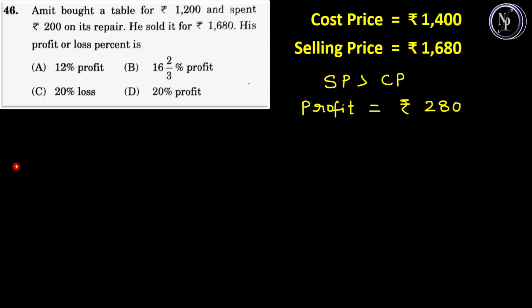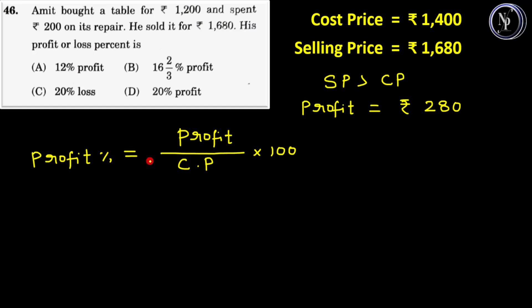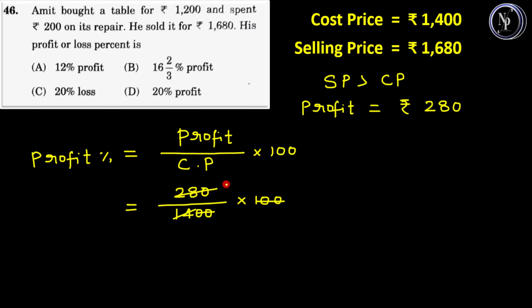To find the profit percent, we have the formula: profit percent is equal to profit divided by cost price CP, into 100. Now let us substitute the values and simplify. Profit is Rs.280 divided by cost price Rs.1400, into 100. We cancel the two zeros and divide 280 by 14. 14 ones are 14, 14 twos are 28, and we put one zero here. Therefore, profit percent is equal to 20%, which is answer option D.